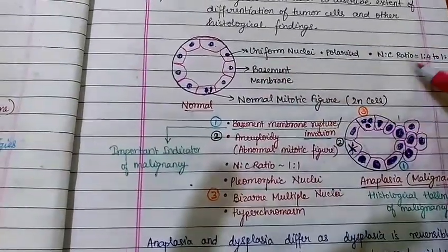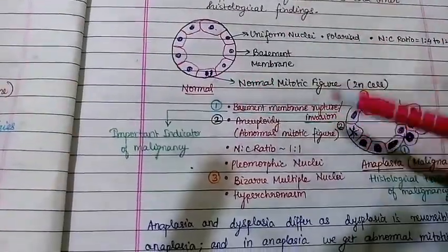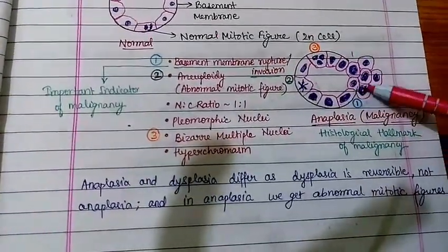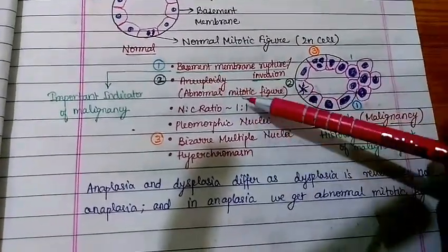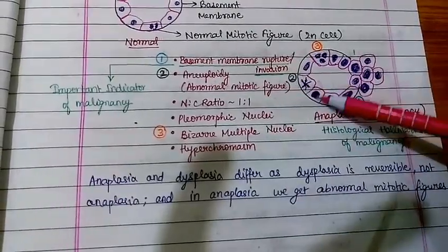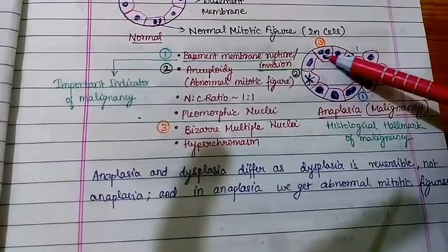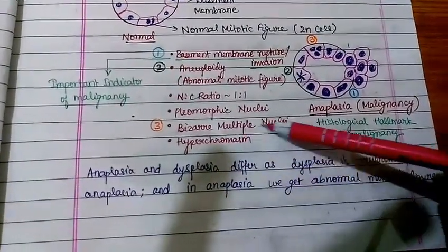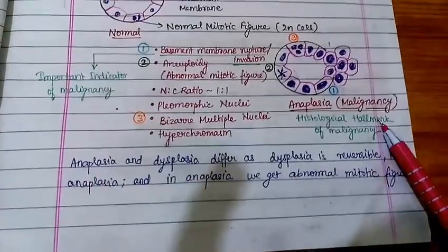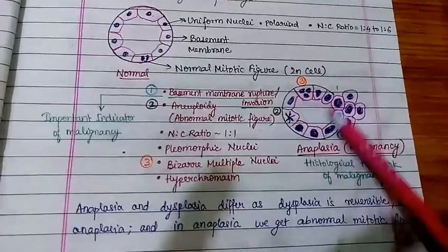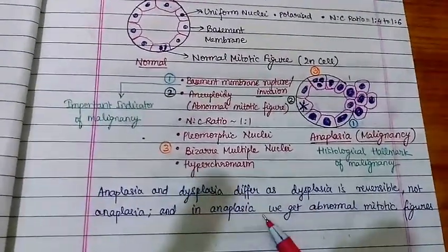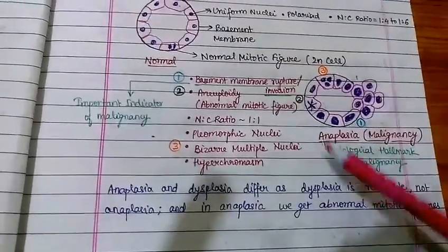A normal cell has uniform nuclei with a nuclear-to-cytoplasmic ratio of 1:4 to 1:6 and normal mitotic figures. In anaplasia, the basement membrane ruptures (invasion occurs), abnormal mitotic figures appear, nuclear-to-cytoplasmic ratio increases to 1:1, bizarre multinucleated cells are seen, and hyperchromasia is present. Anaplasia differs from dysplasia in that dysplasia is reversible whereas anaplasia is not, and abnormal mitotic figures (atypical mitoses) are seen in anaplasia.